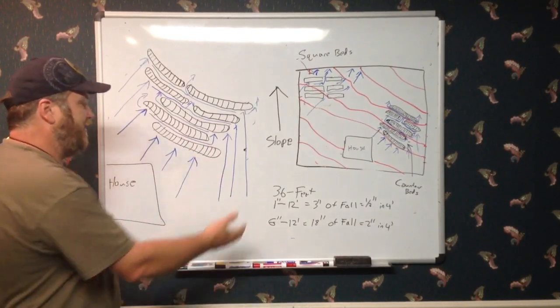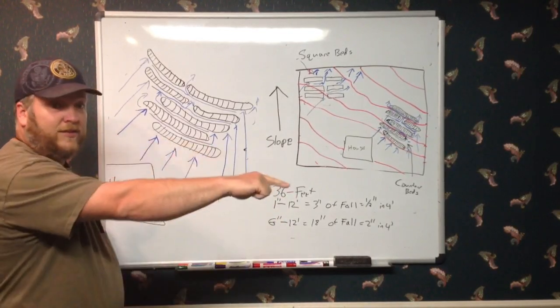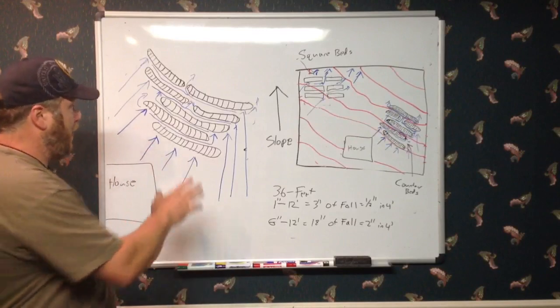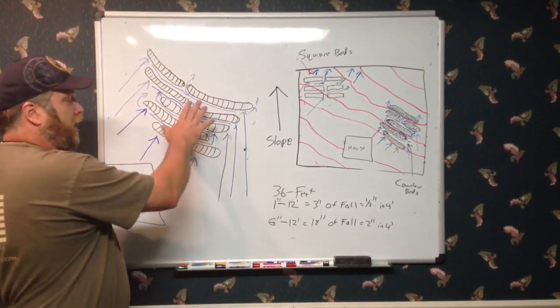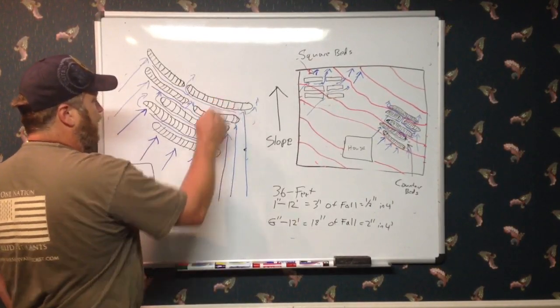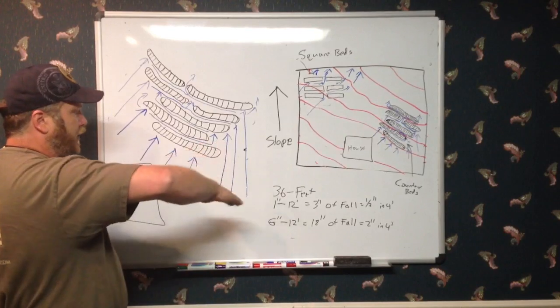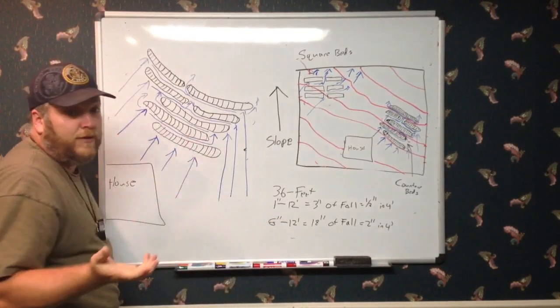If we had a significant fall, say 6 inches and 12 feet, you would see the slope. Your mind, your eye would key in on that's a fairly significant fall. But it's not anything we can't overcome with this design. We would have 18 inches of fall between here and here. So across 36 feet, a foot and a half drop. We would still only have 2 inches and 4 feet then.